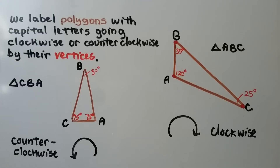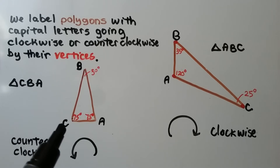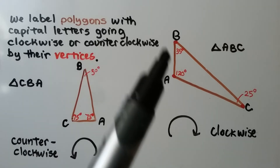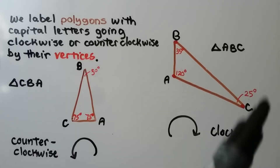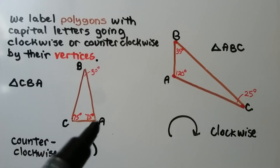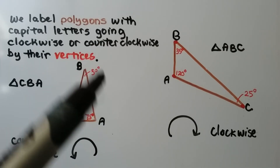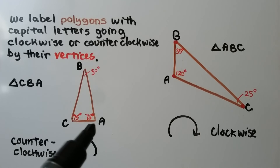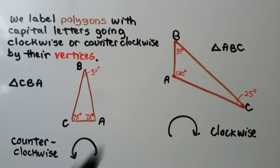We label polygons with capital letters going clockwise — A, B, C — or counterclockwise. We can say A, B, C, or even C, B, A. They're labeled by their vertices.